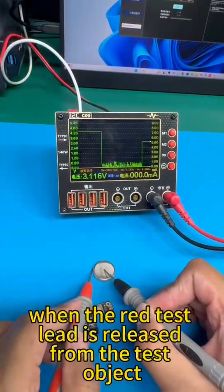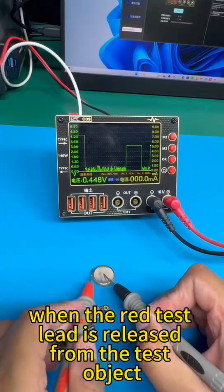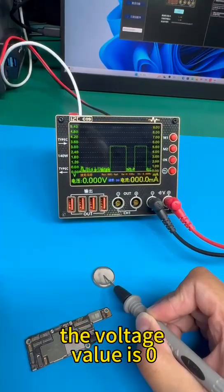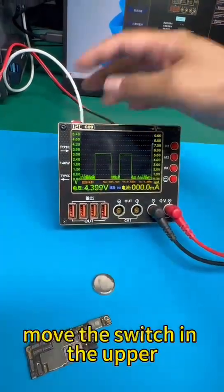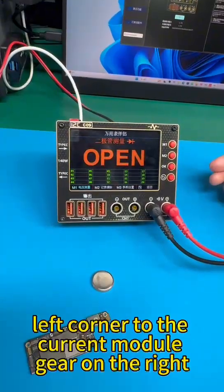However, when the red test lead is released from the test object, the voltage value is zero. Move the switch in the upper left corner to the current module gear on the right.